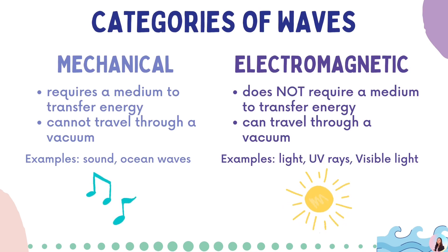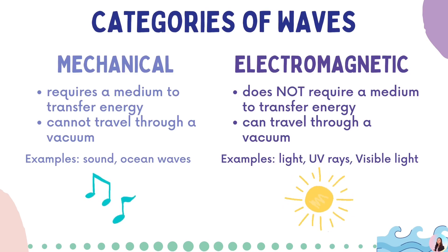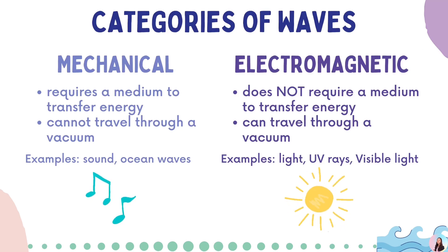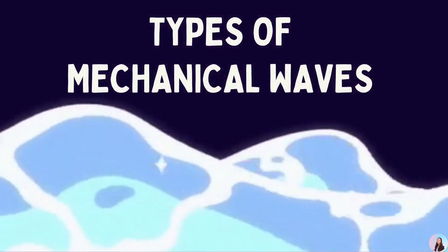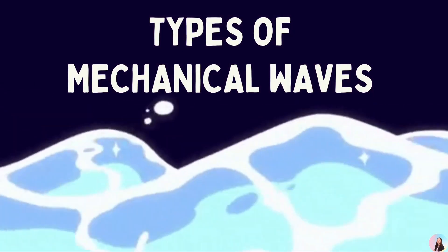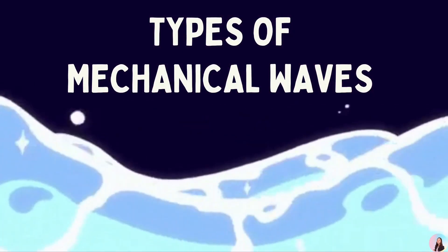On the other hand, we have electromagnetic wave. This wave does not require a medium to transfer energy. It can also travel through a vacuum. Examples are light, UV rays, and visible light. Mechanical waves can be classified according to the direction of motion of the particles of the medium.